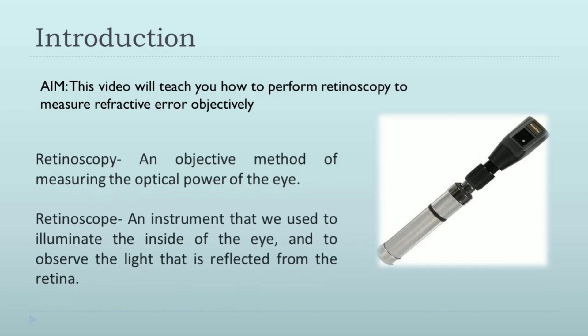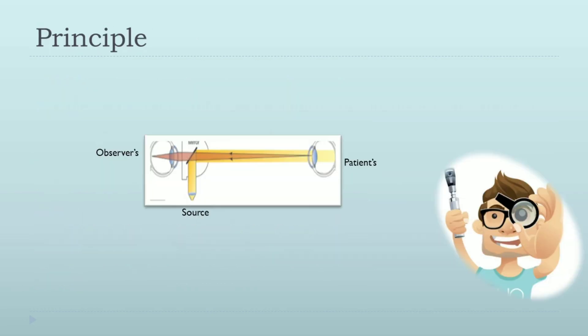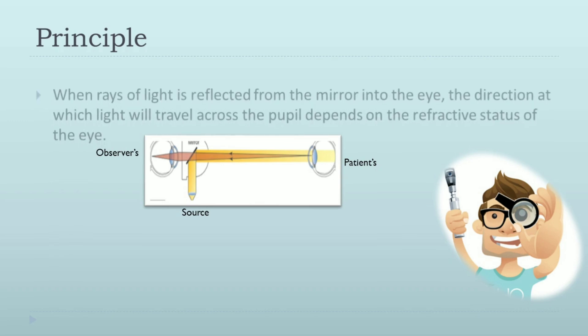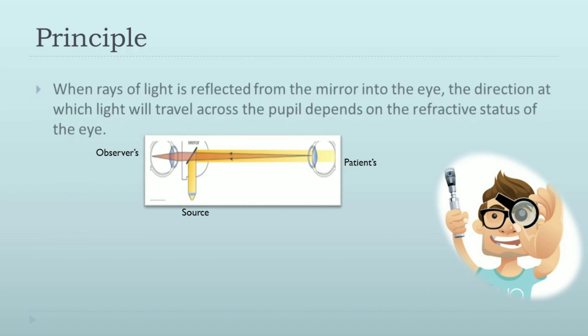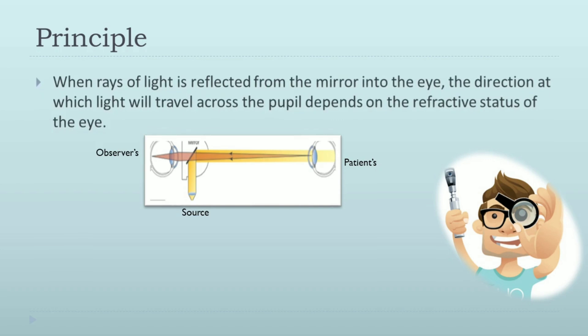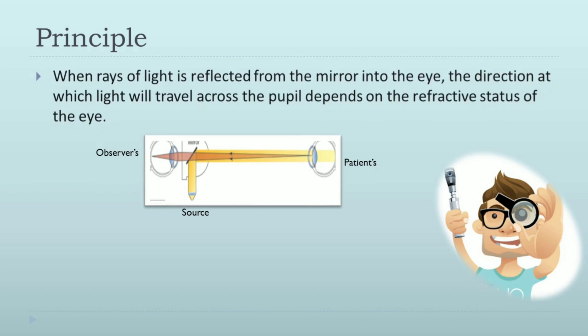Coming to the principle: when a ray of light is reflected from the mirror into the eye, the direction at which light will travel across the pupil depends on the refractive status of the eye. You can see this in the pictures given below.